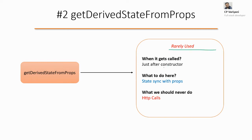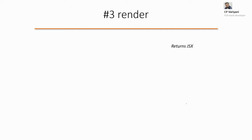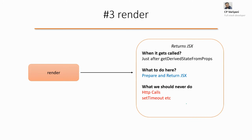getDerivedStateFromProps gets called just after the constructor. Generally, as I said, we rarely make use of this method, but you can do some sort of state sync with the props if required. Sometimes your state changes and you want to keep it in sync with the props - that's when you might use getDerivedStateFromProps. Of course, we would never make HTTP calls here either.